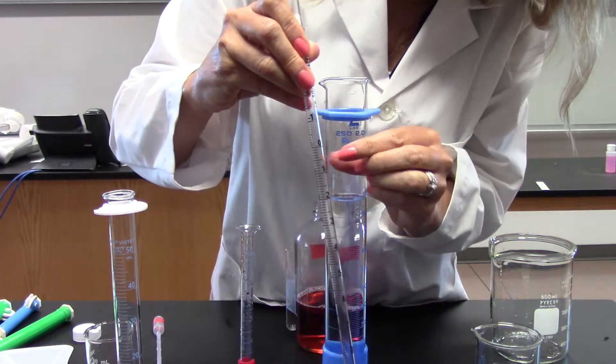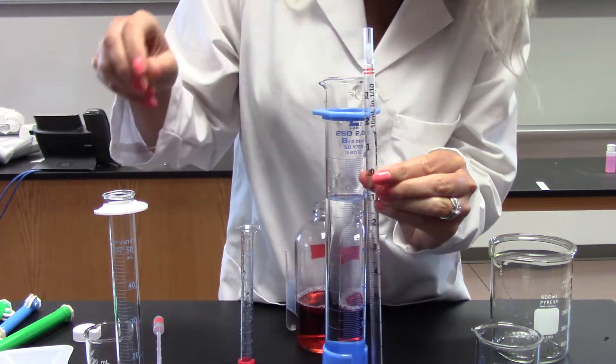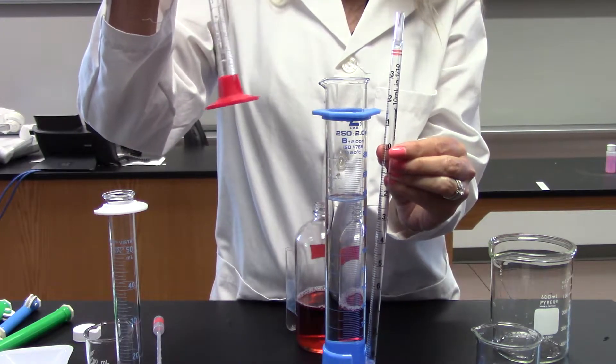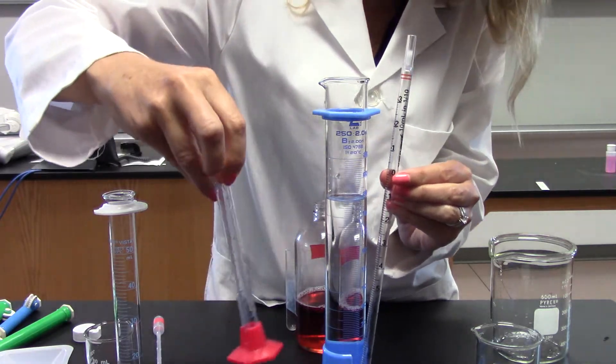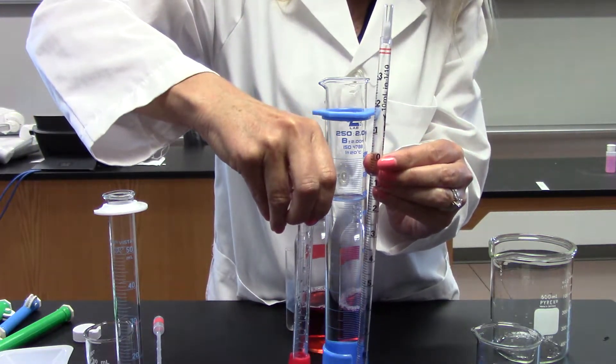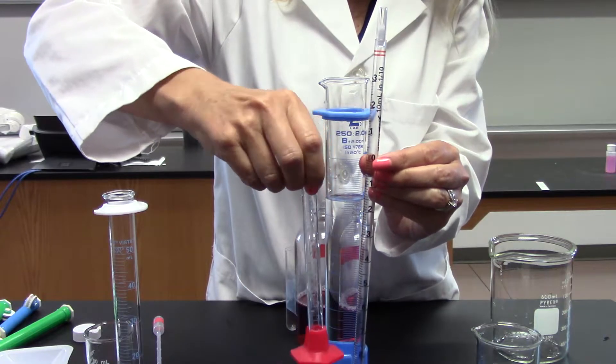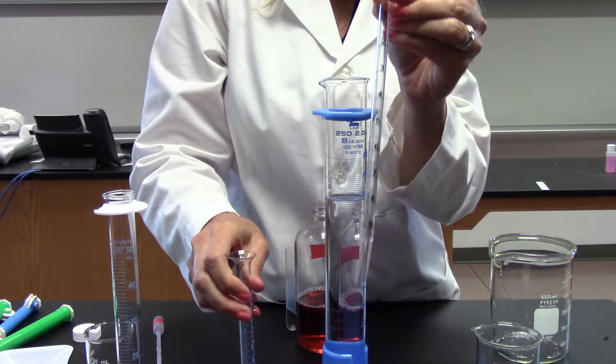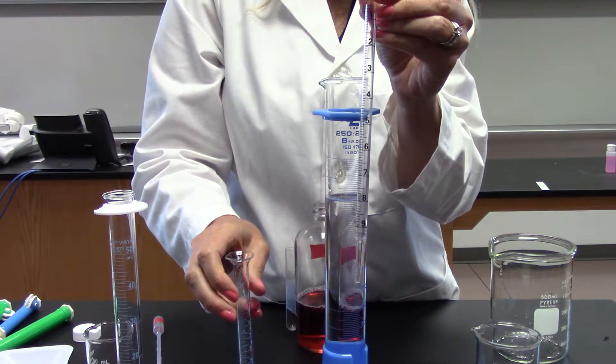Something else I want to point out - this is a 10 milliliter pipette with the zero at the top. This is a 10 milliliter graduated cylinder with the 10 at the top and zero at the bottom. The numbering is reversed. The reason for this is the pipette dispenses out the top and the graduated cylinder dispenses out the bottom.